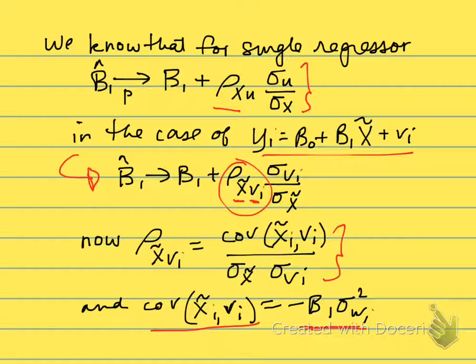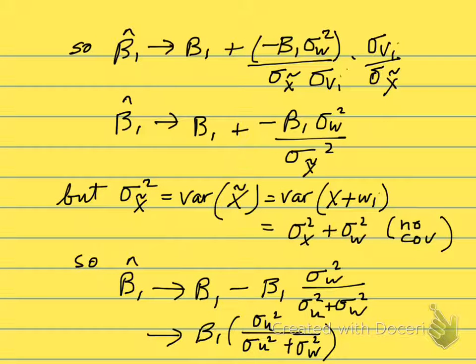So we'll substitute that in. When we put this -β₁σ²w in, we will then have, we've substituted it in here, and then this is the rest of the correlation coefficient.